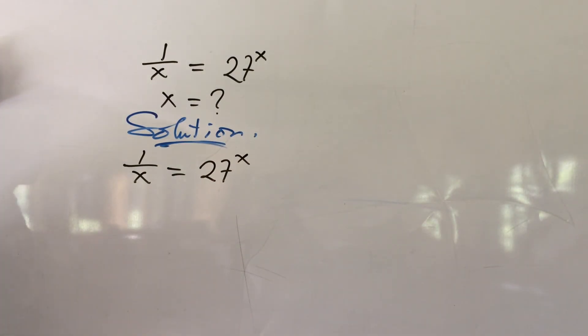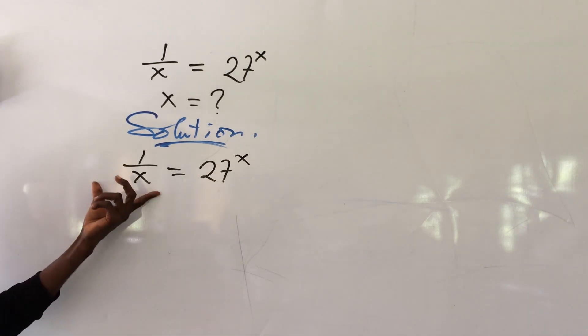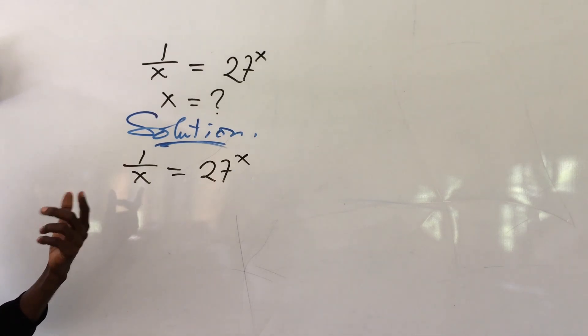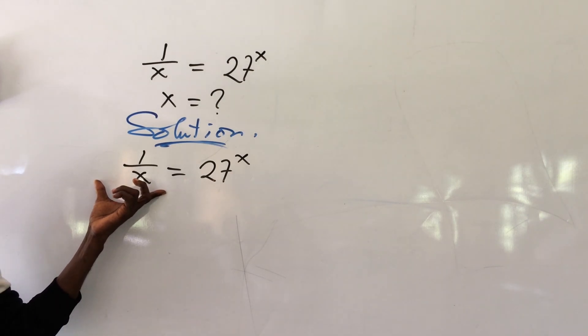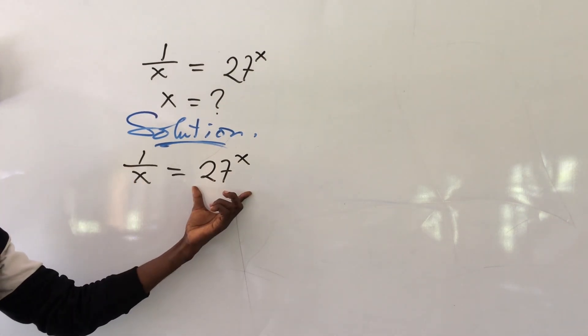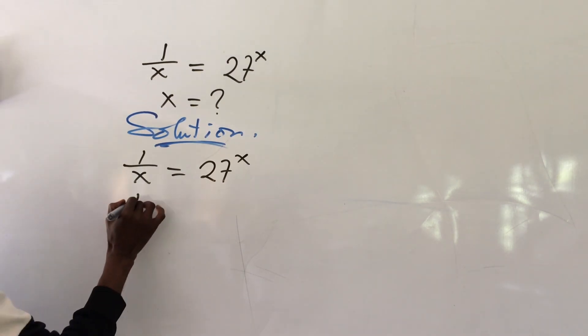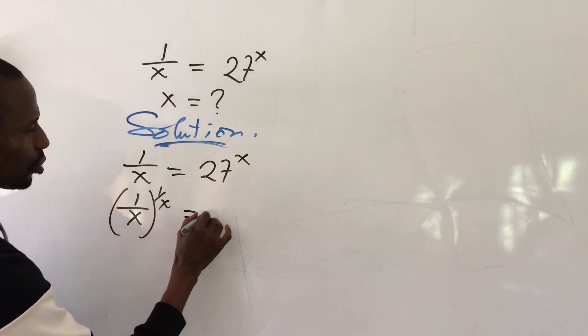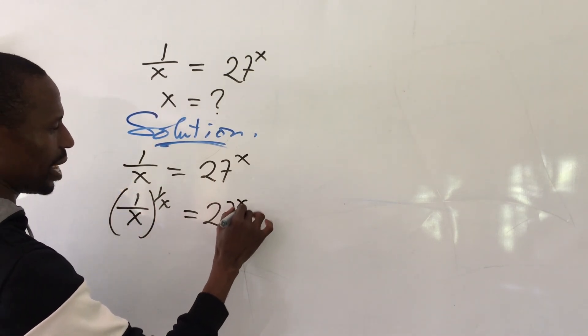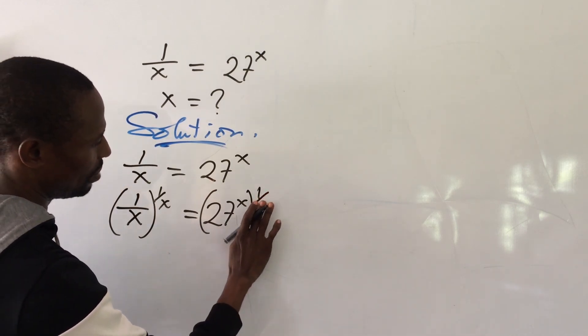This may pose a bit of a challenge but we are going to use a method that will enable you to beat the examiner's time. What we do here is to raise it to the power of 1 all over x. So I can rewrite this as 1 all over x raised to the power of 1 all over x equal to 27 to the power of x raised to the power of 1 all over x.